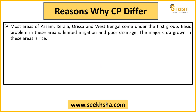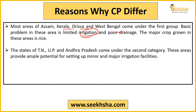Assam, Kerala, Odisha, and West Bengal come in the first category where rainfall is more than 1150 mm. The basic problem here is that while water is available, irrigation potential is not fully developed and drainage issues lead to waterlogging conditions. Because of this, the major crop grown here is rice, as no other crop grows well there.